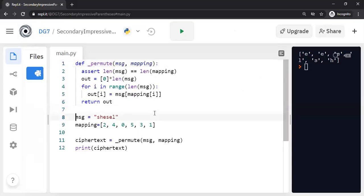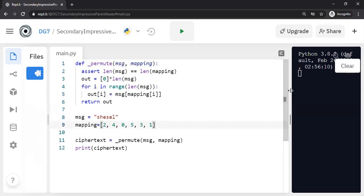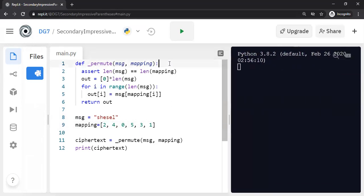So here's my input, 'shesel', right? And I defined the mapping exactly the same as what you saw on the whiteboard. And let us now walk through this piece of code. I'm just showing you for one block and then I will show it to you for multiple blocks. We need to make sure that the input message is same as the length of the mapping. So if we have six input characters, we need six characters in the mapping. That's the reason for this assertion.